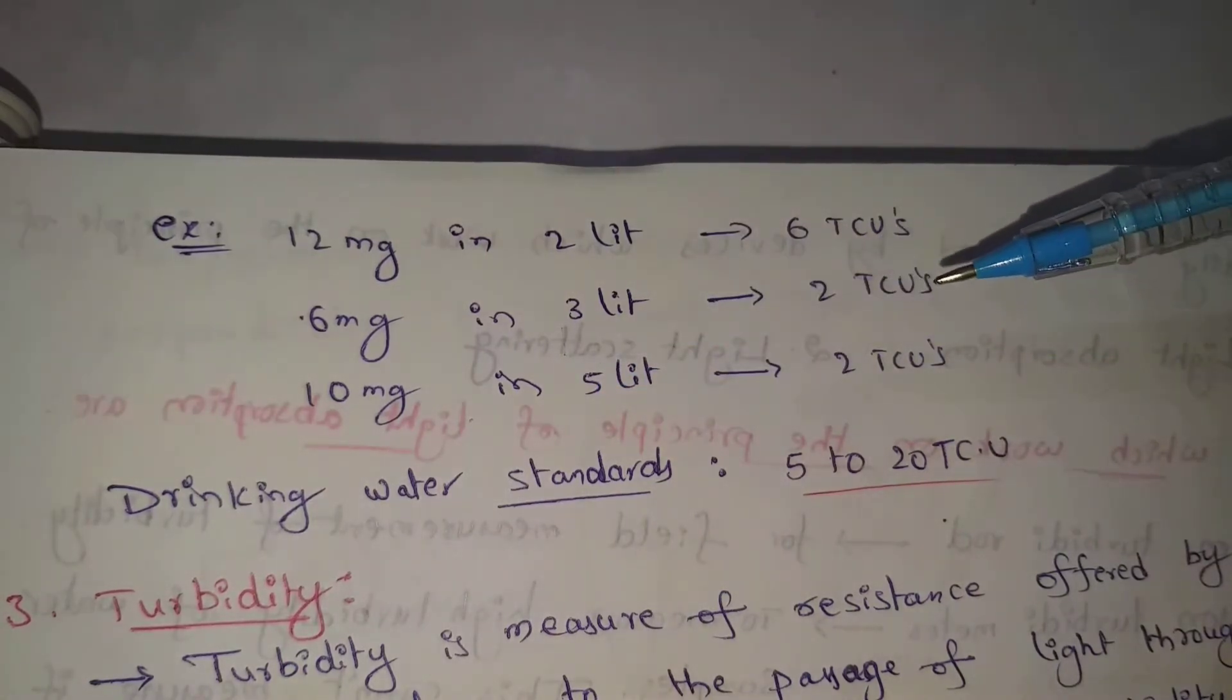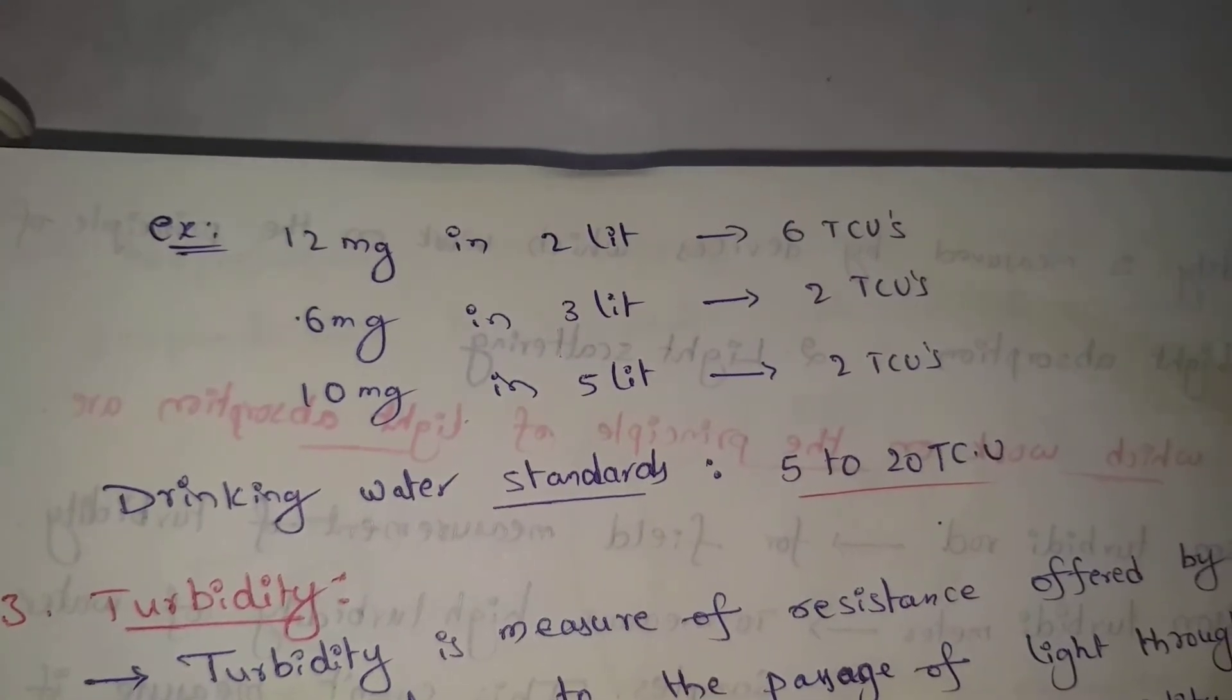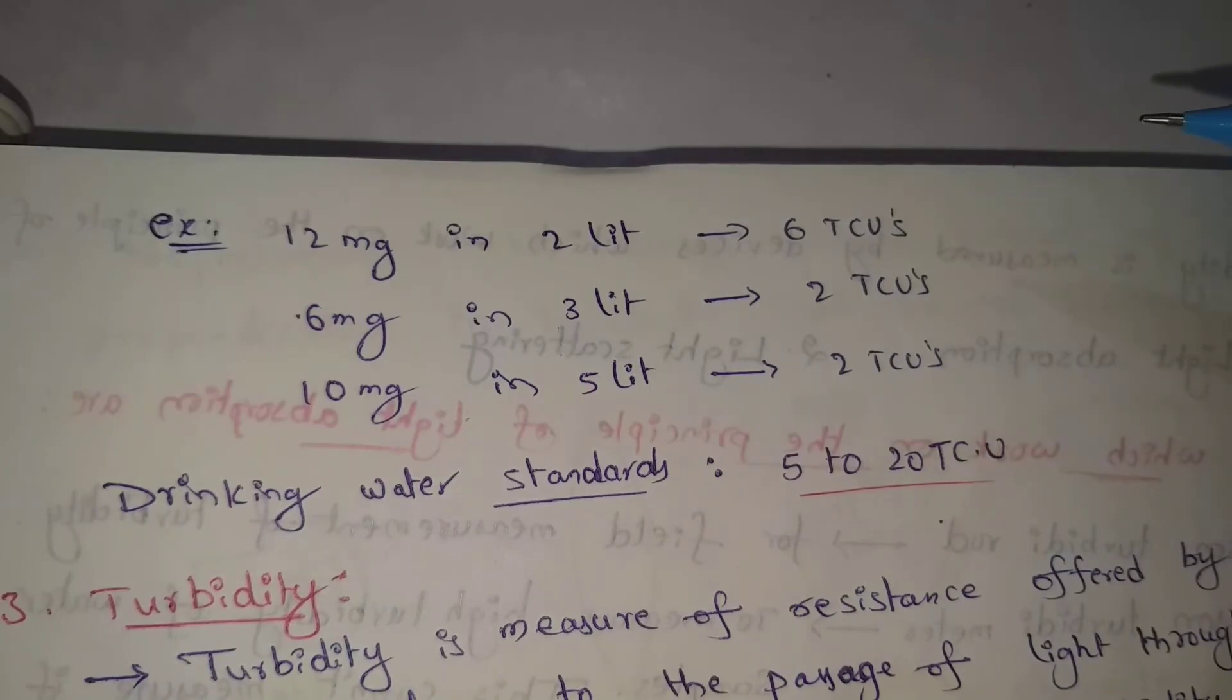Ten milligrams in 5 liters of distilled water equals 2 TCU. For example, 100 milligrams in 5 liters gives 20 TCU. Drinking water standards are 5 to 20 TCU.